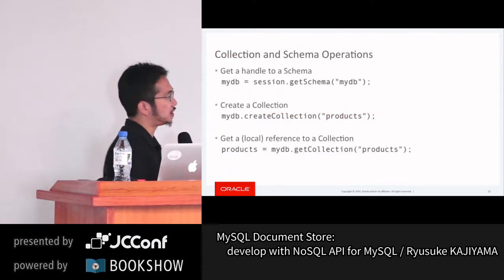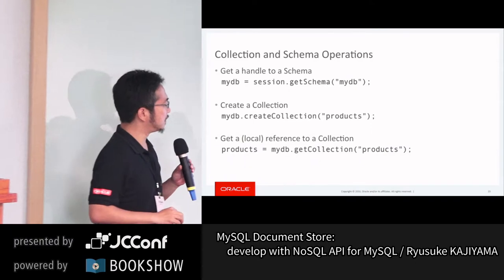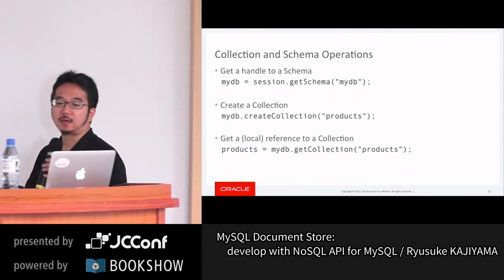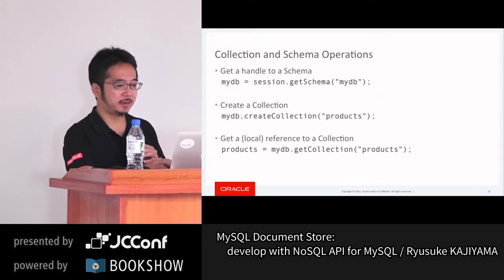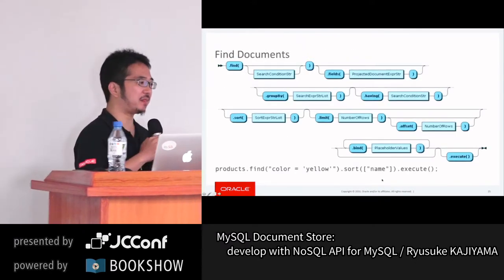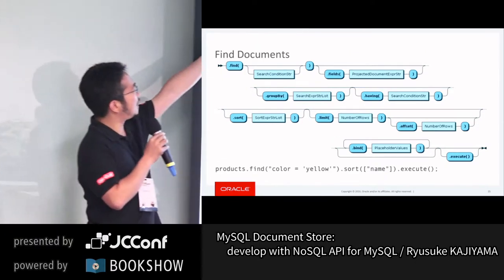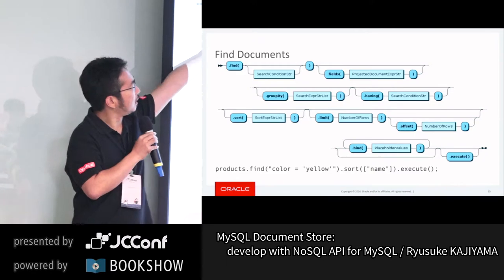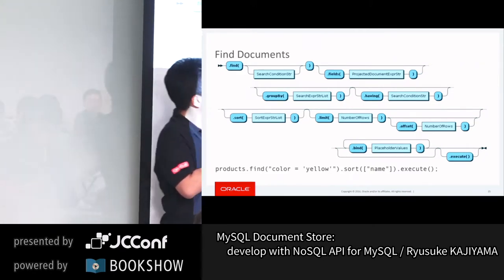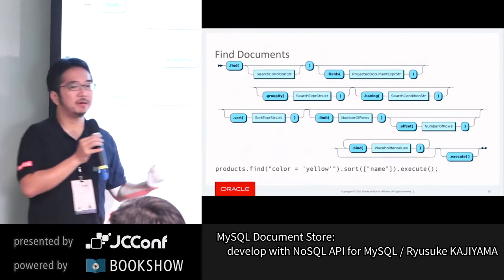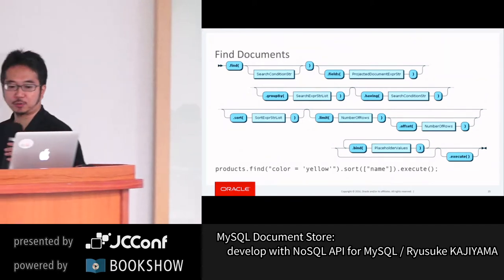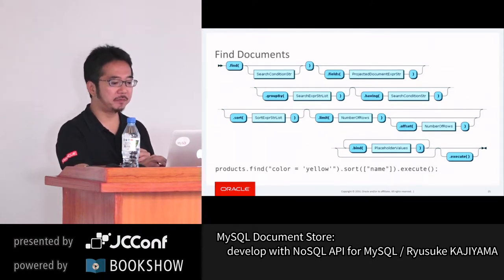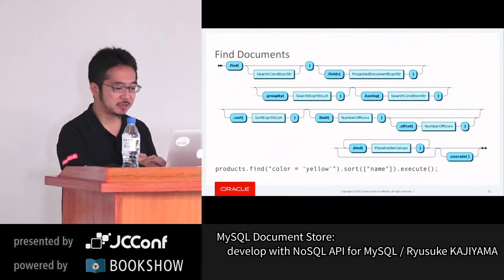There are many operations available — session, collection, and finally fetching some data. Here's an example of the find method against a document — here's a find function with a condition for searching data. A lot of different APIs are available, which I'll come back to after showing real examples. This is already in the reference manual, so you can look these up.